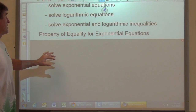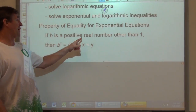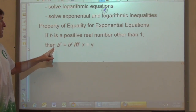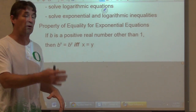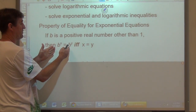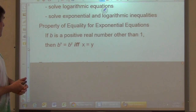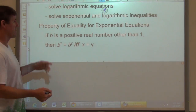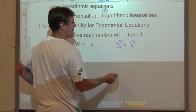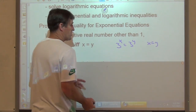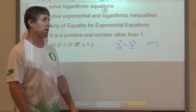The property of equality for exponential equations tells us: if b is a positive real number other than 1, then b to the x equals b to the y if and only if x equals y — meaning it works both ways. So if we can write both sides with the same base, like 3 to the x equals 3 to the y, the only way that can be true is if x equals y. We can then just work with the exponents and solve the equation.